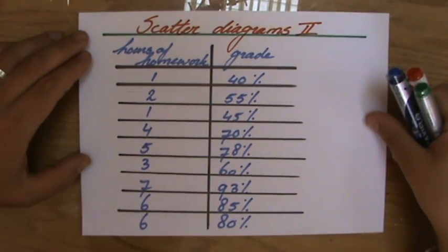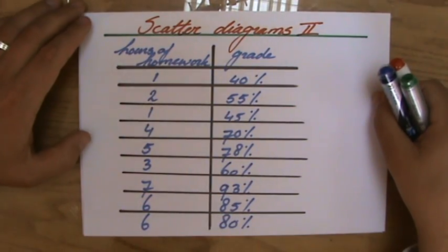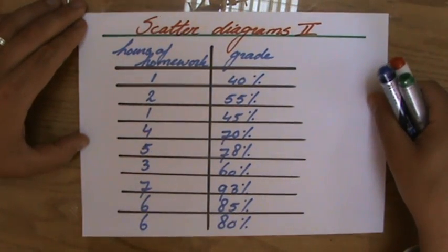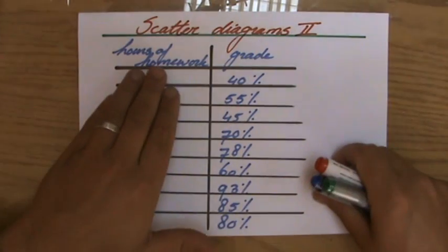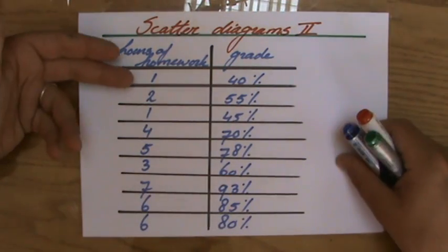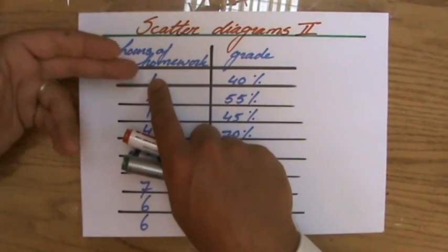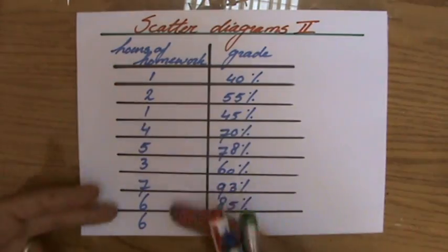Welcome to this second part about scatter diagrams. I introduced what scatter diagrams are in my previous video, and now we're going to answer a question. I've asked several students the amount of homework they do each week and their grade for their maths exam. So you can see one hour, this particular student did homework per week and got 40%, and that's the rest of the information.